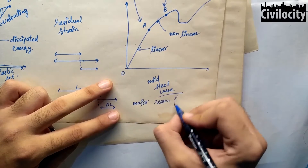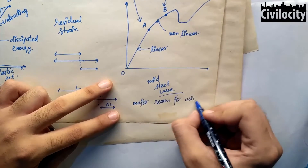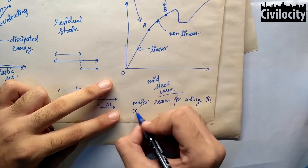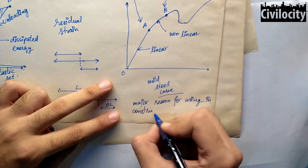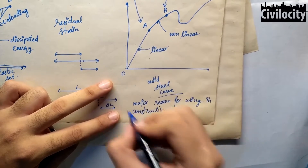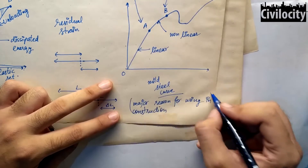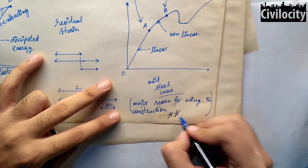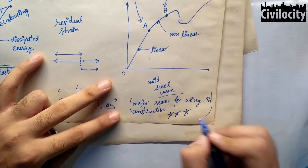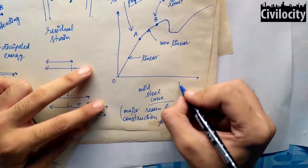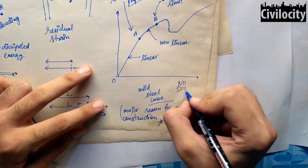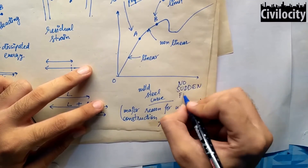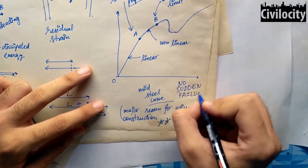If we look at the stress-strain curve, the rupture point is very far away — this is the reason we use steel in construction. It does not fail suddenly. Imagine there is a heavy load and a building is about to fail — it will not happen without warning. It will first crack, then the plaster will go, and then you will have time for evacuation. That is why we use steel — it has great strength.